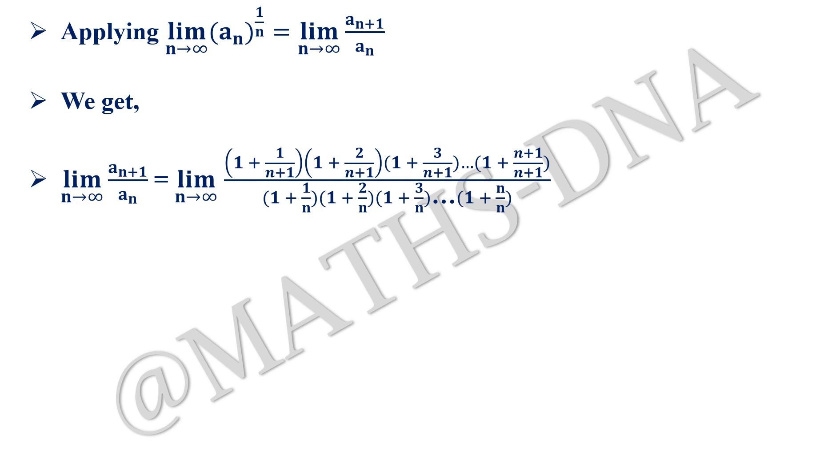Now moving ahead, we have limit n tends to infinity an raised to 1 upon n equals limit n tends to infinity an plus 1 upon an. So here we get limit n tends to infinity an plus 1 upon an equals 1 plus 1 upon n plus 1, plus 2 upon n plus 1, plus 3 upon n plus 1, up to 1 plus n plus 1 upon n plus 1, whole divided by the original term 1 plus 1 by n, 1 plus 2 by n, up to 1 plus n by n. Simply we just replaced n with n plus 1 in the numerator.